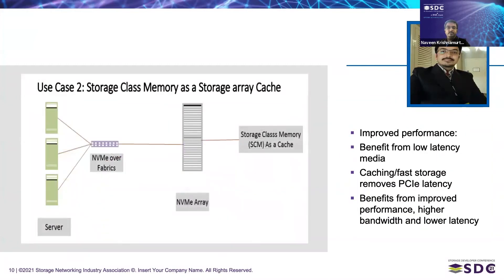The second use case is storage class memory used as a storage array cache. The storage used inside an array acts as an array cache, resulting in improved performance by benefiting from low-latency media. It removes whatever minimal PCIe latency remained, with definite benefits from improved performance, higher bandwidth, and lower latency.